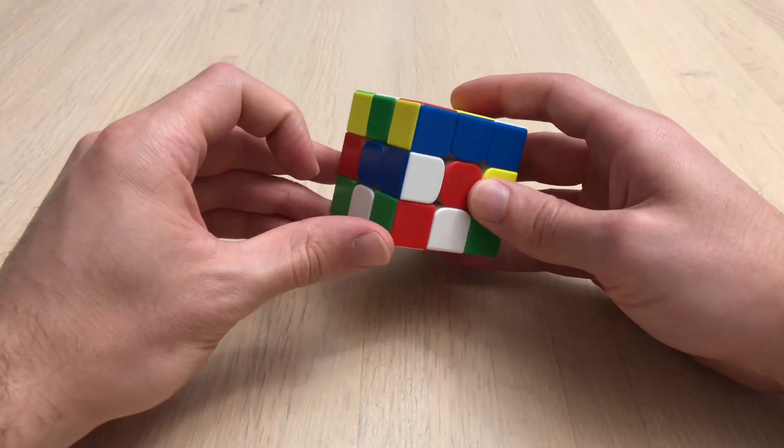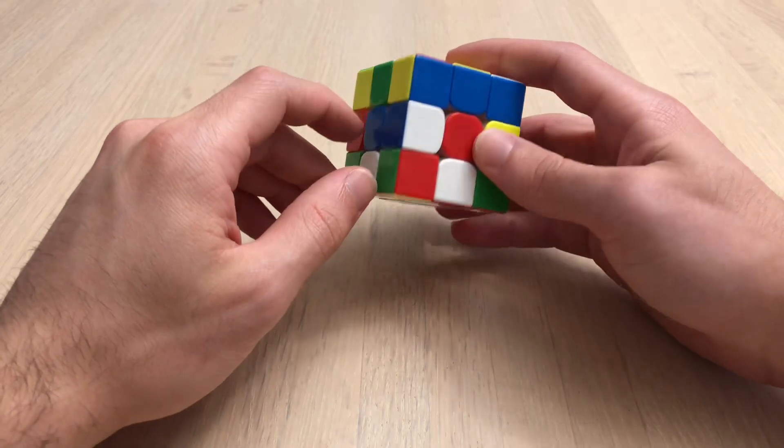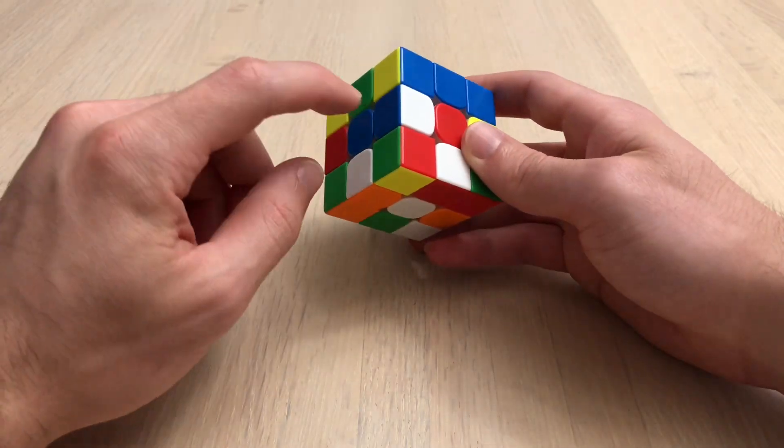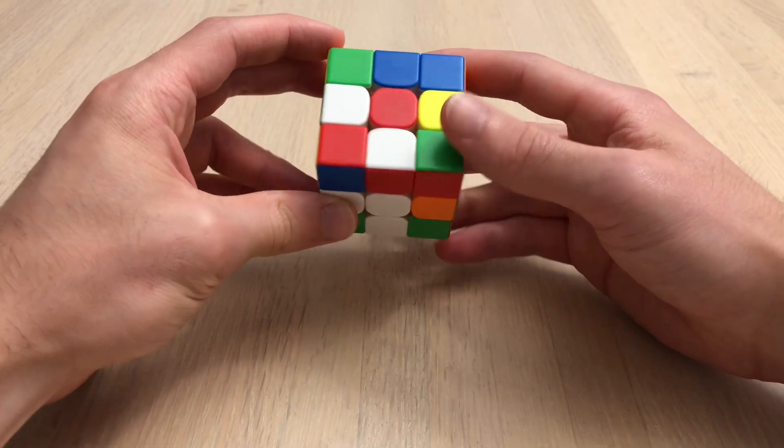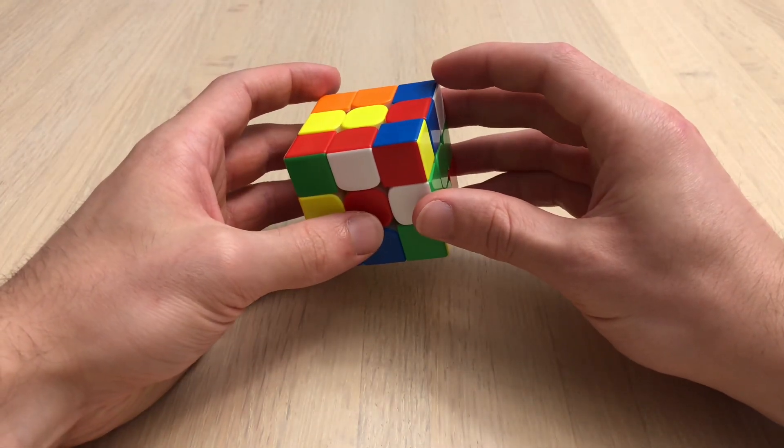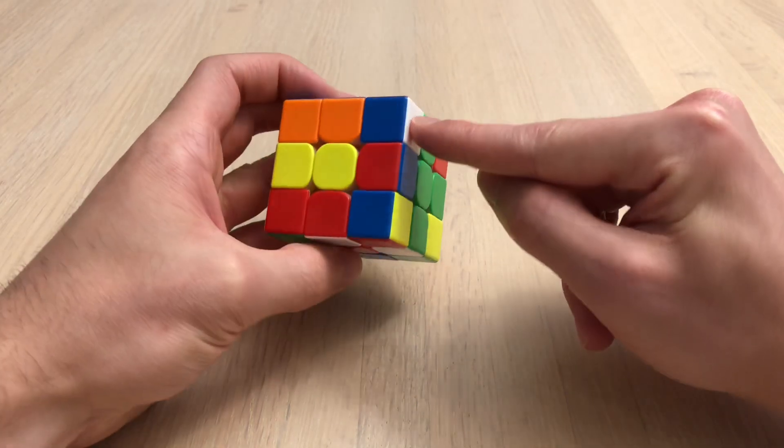For a scramble, I see all four white cross edges right away. I'm going to start by doing white blue and white orange like that. F2, and then during that I see this pair right here.